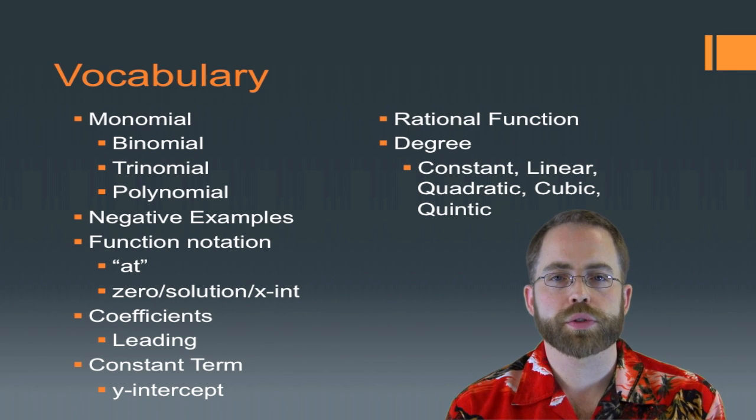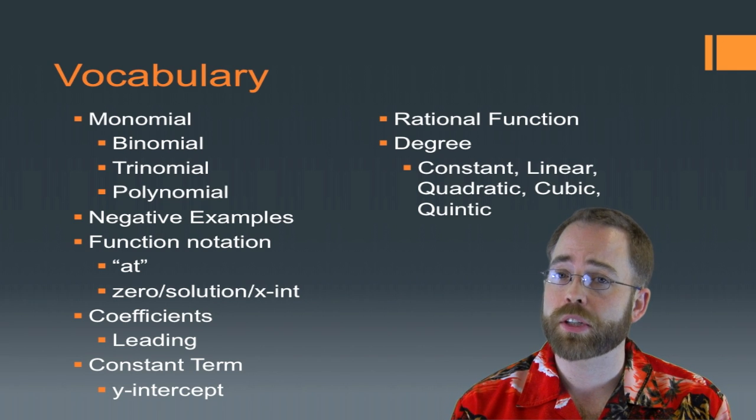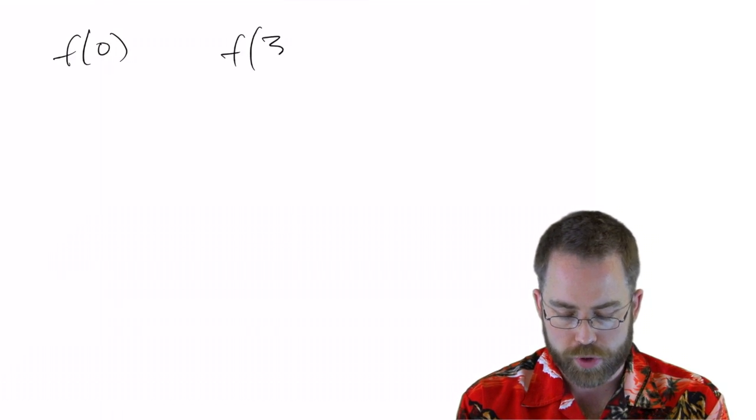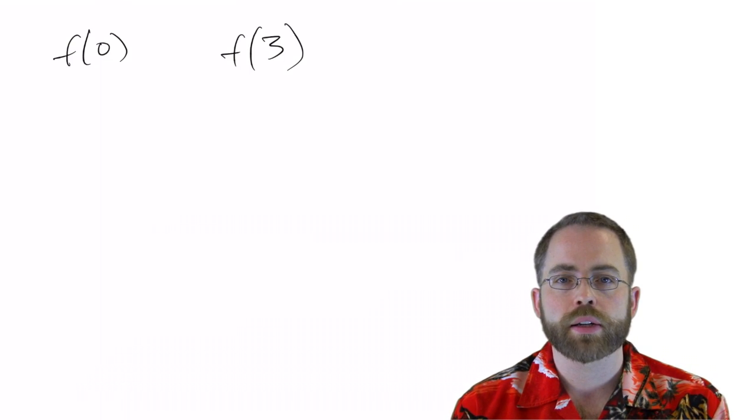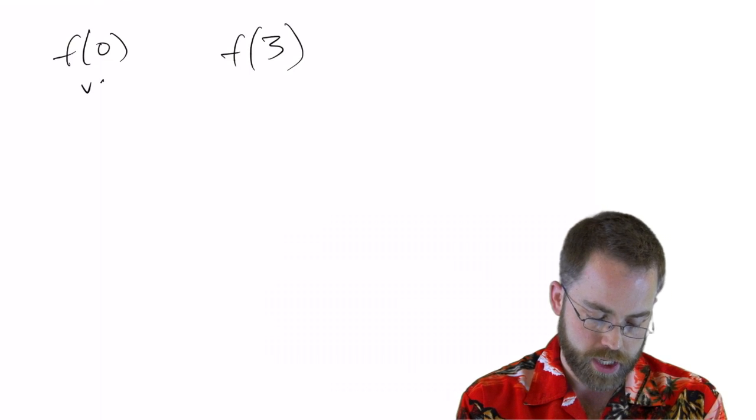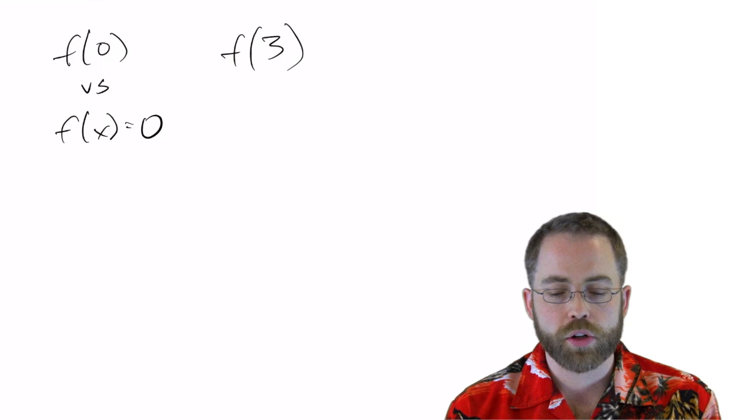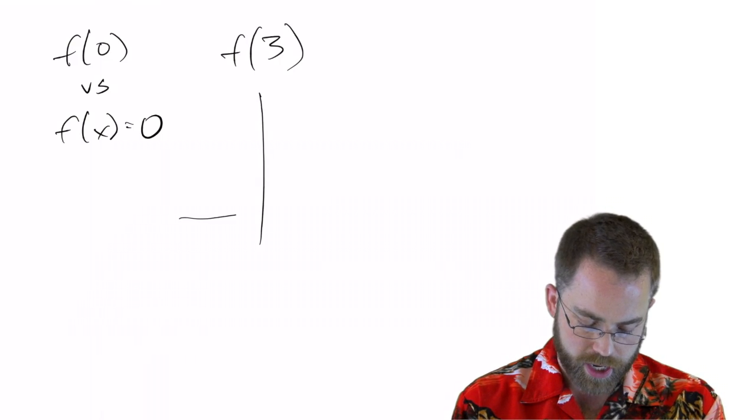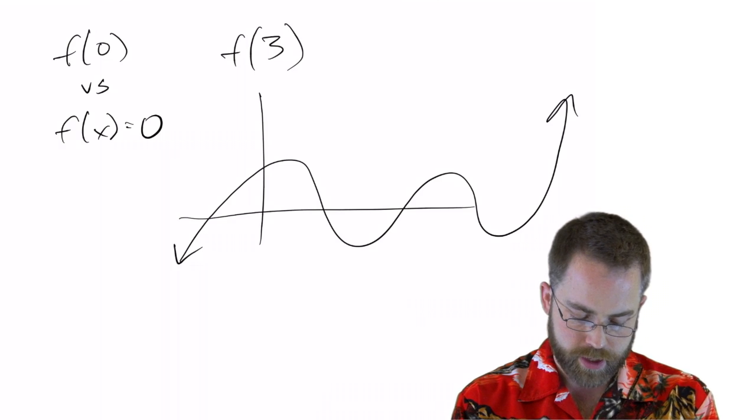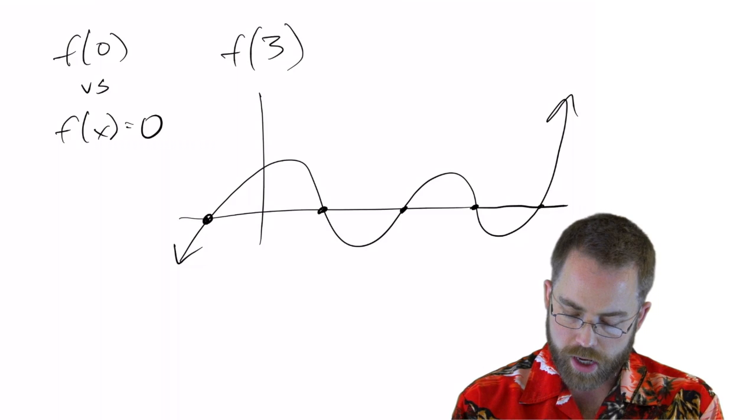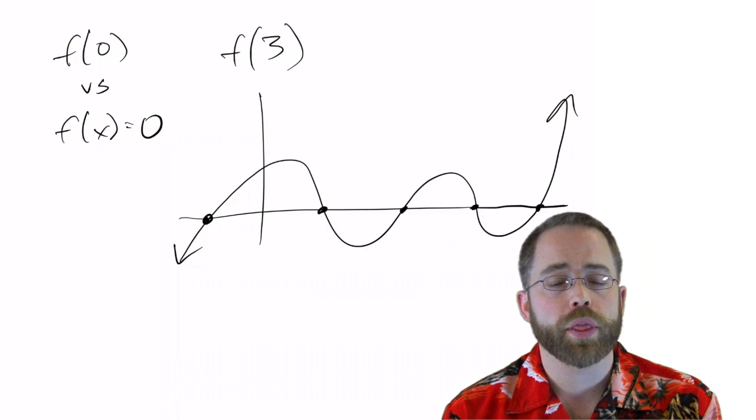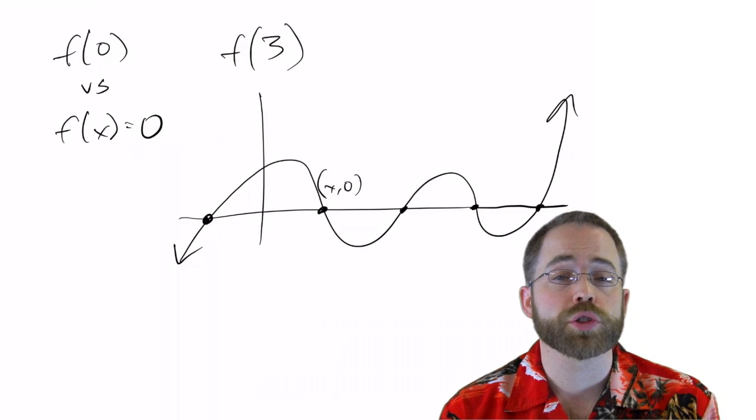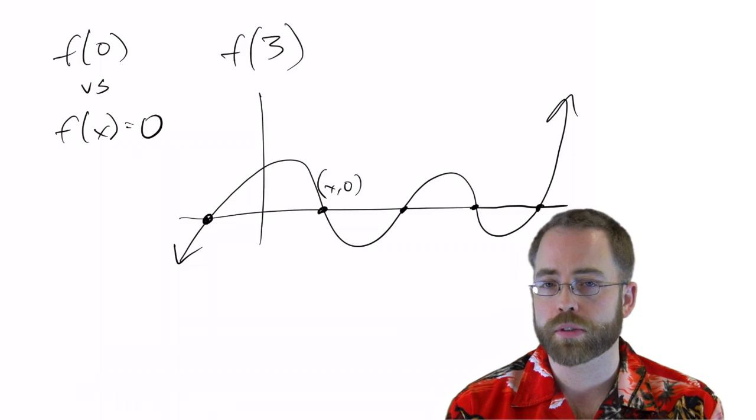Next, we've got function notation. You should have been familiar with this since chapter 0, and we're going to be using it a lot, so don't get it twisted. We need to be able to say, what is f at 0? What is f at 3? And then you really have to be able to tell the difference between f of 0 and f of x equals 0. When we are looking for zeros or solutions to a polynomial function, we want to know when the y is equal to 0. So if I've got some polynomial that looks like this, and I'm asking you for the zeros or for the solutions, I'm asking for the x-coordinates when the y is equal to 0, where it crosses the x-axis, x-intercepts. Those are what solutions are.